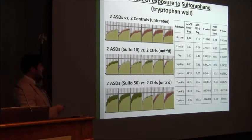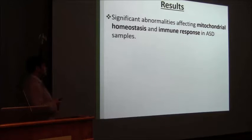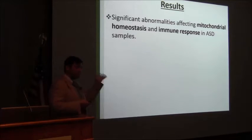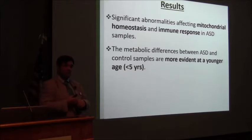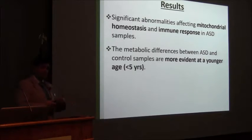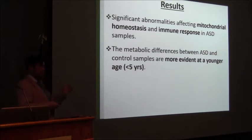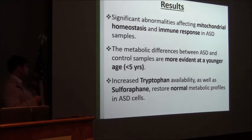We see that 3 cases were still away, but that is confirmed statistically — at sulforaphane concentrations of 10 and 50 micromolar, there are basically no significant differences. To sum it up, our results point to significant abnormalities affecting mitochondria and immune response, confirmed both from our metabolomic approach and our Biolog phenotype approach. When we look at this for biomarker and screening test applications, the difference is more evident at younger ages, particularly below the age of 5. Since the average diagnostic age for autism is around 3, this could allow us to develop a screening test effective for early or even pre-symptomatic screening. Preliminary data from treatment experiments show that increased tryptophan availability and sulforaphane are capable of restoring normal metabolic response.